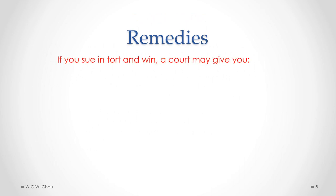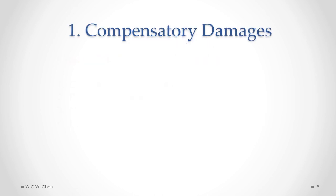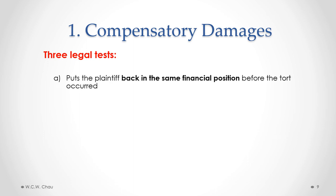Let's now talk about remedies. If you sue in tort and win, a court may give you one of four different remedies: compensatory damages, punitive damages, nominal damages, and injunction. Compensatory damages is where the court orders the defendant to pay money to the plaintiff to compensate for the losses or injuries suffered from the tort. There are three legal tests applied to determine compensatory damages. The first is that the amount of damages should be the amount that puts the plaintiff back in the same financial position as if the tort had not occurred.